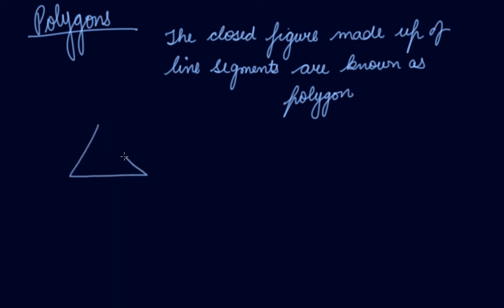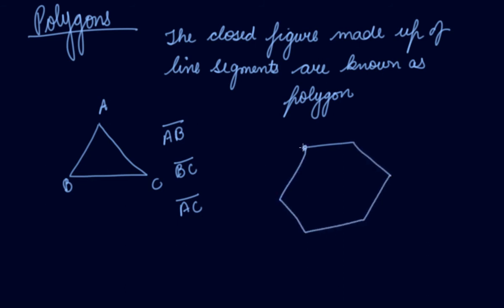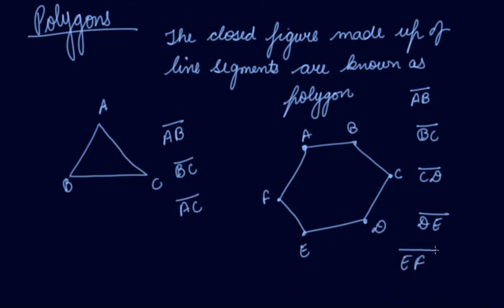Let's take this triangle — it is a polygon with three line segments: AB, BC, and CA. AB is a line segment, BC is a line segment, and CA is a line segment. This is a closed figure made up of line segments. If I take this next figure, it is again a closed figure with line segments AB, BC, CD, DE, EF — so there are six line segments. All figures made up of line segments are known as polygons.